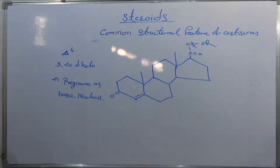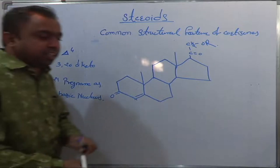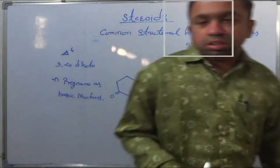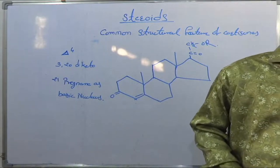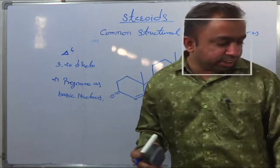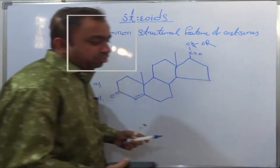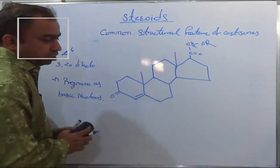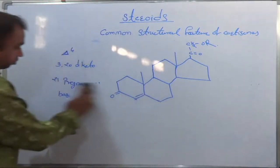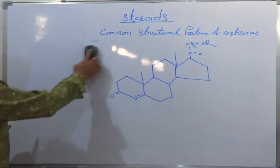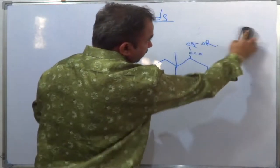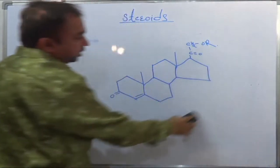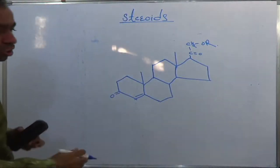So friends, now we will deal with the various examples of cortisone. Cortisone has different examples. First, write down the common structure of cortisone.